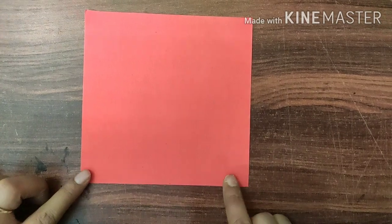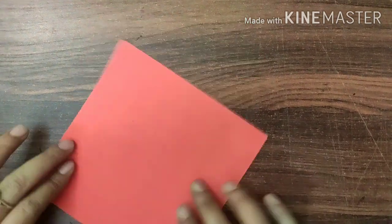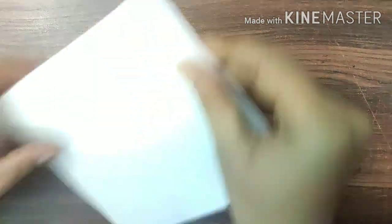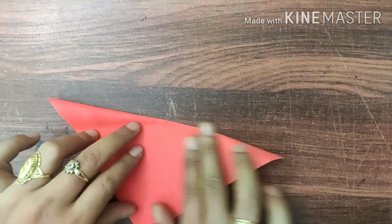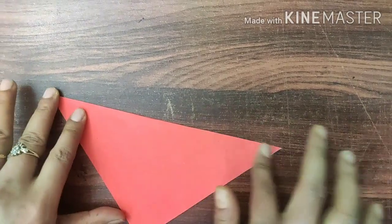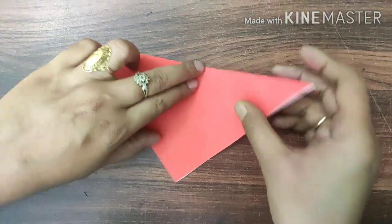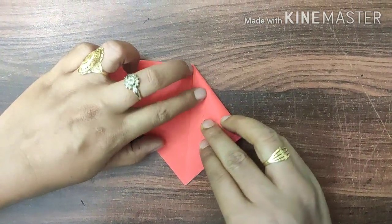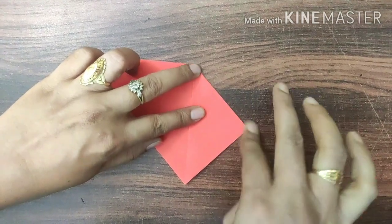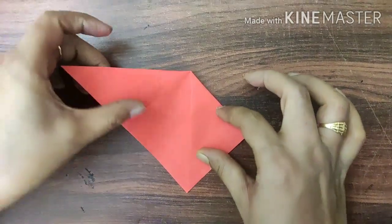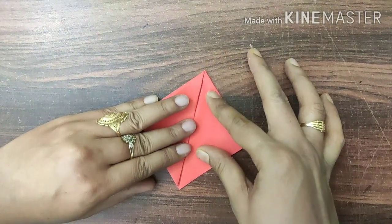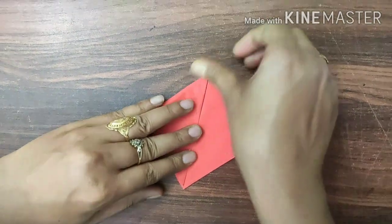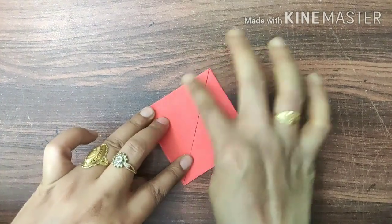First of all, take an origami sheet. Fold it in half. Now again, fold it like this. Make another triangle as shown and do the same from the other side. Press it gently.